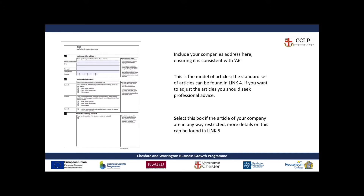A8 is articles of association — these act as a contract between the company and its shareholders, setting out the rights and obligations of both directors and shareholders. Model articles are available set out by the government in link four. If you want to include other articles or take articles out from the set guidance, you should seek professional advice. A8 also asks whether you have restricted articles included, and more details on that can be found in link five.